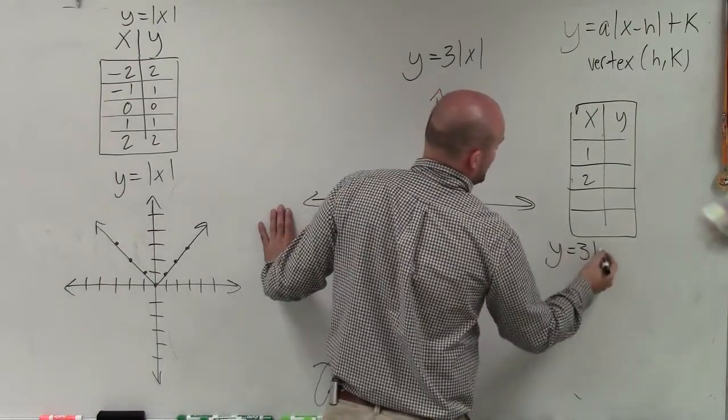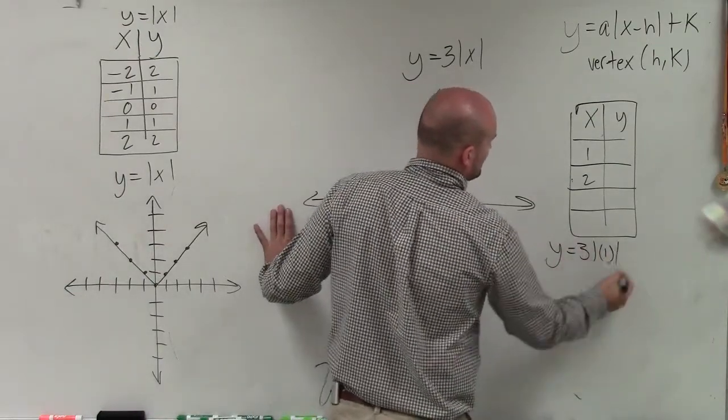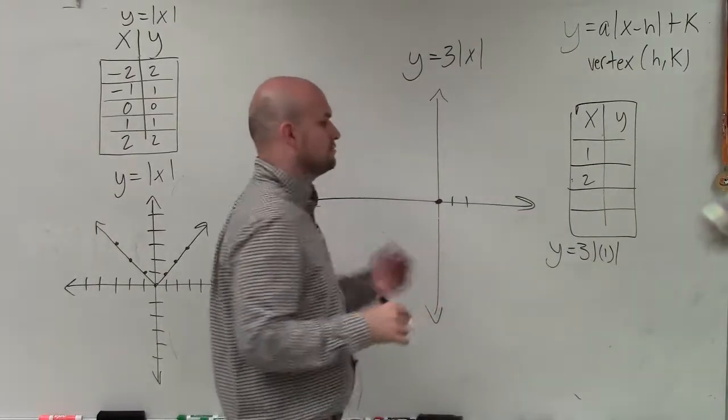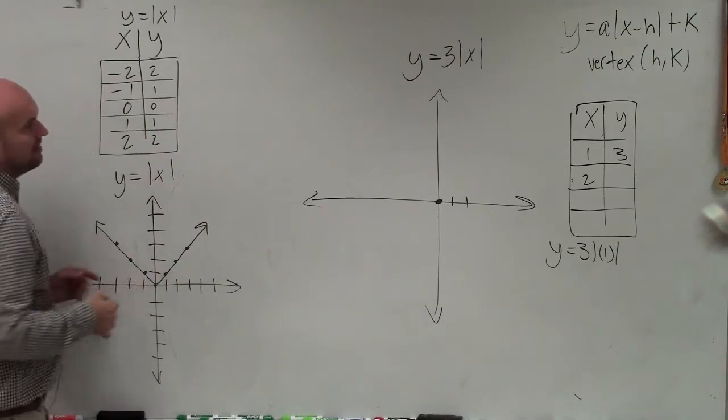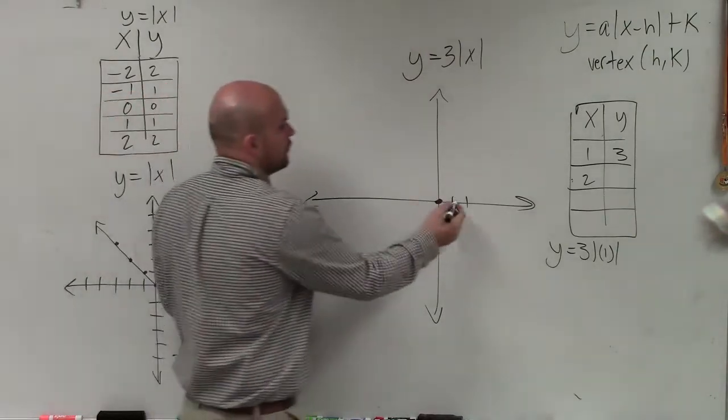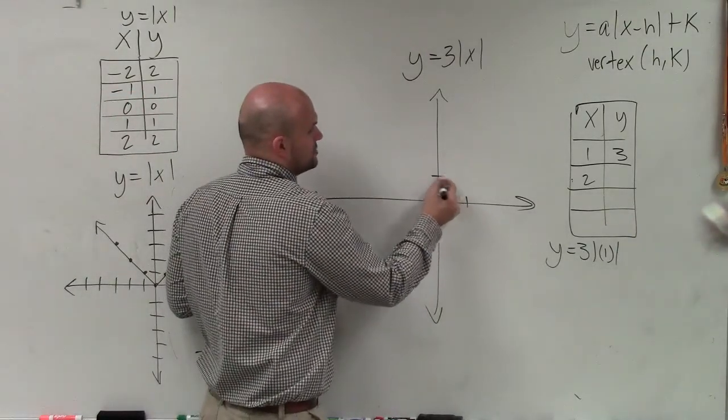So I have y equals 3 times the absolute value of 1. Well, absolute value of 1 is 1. 1 times 3 is 3. So instead of my parent graph of going over 1 up 1, what that 3 is doing is I'm going over 1 up 3. 1, 2, 3.